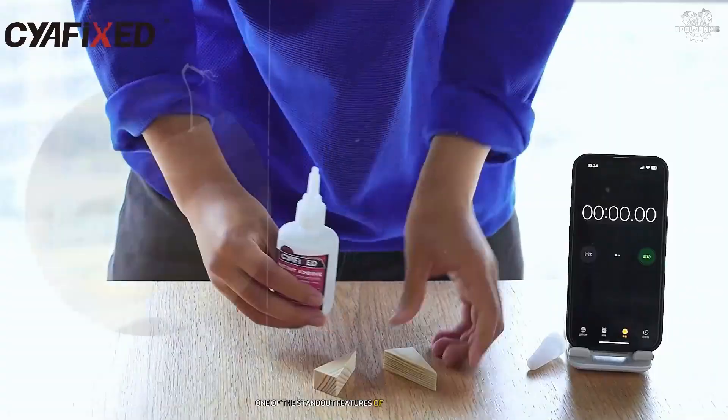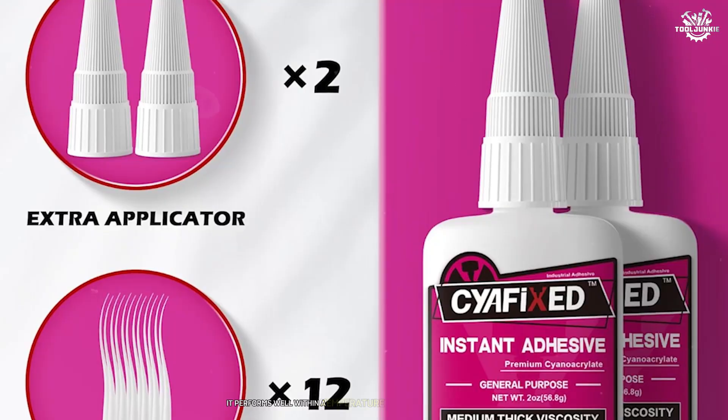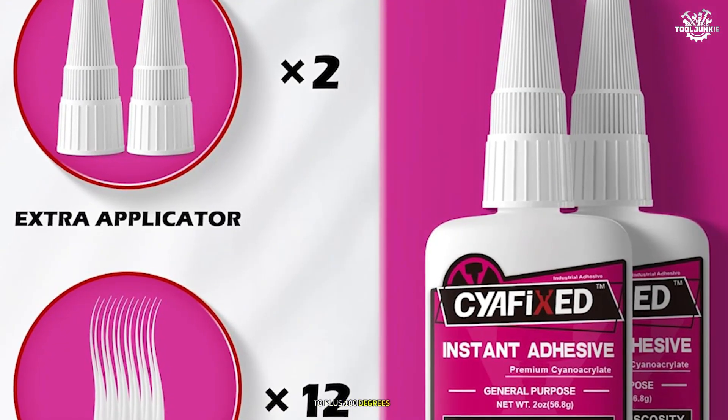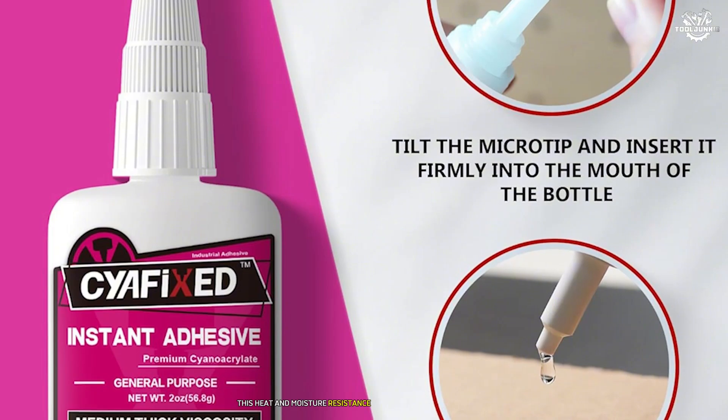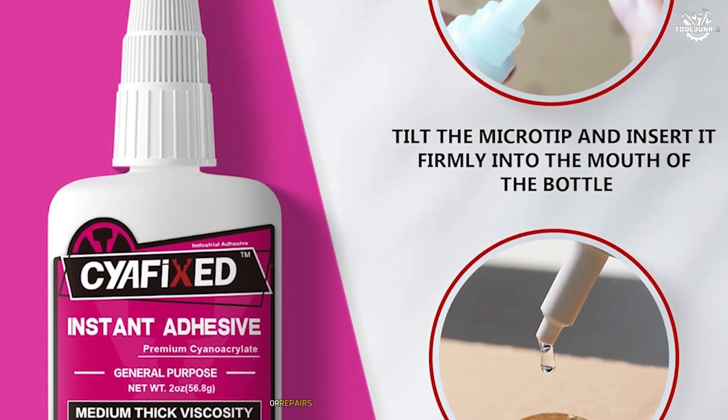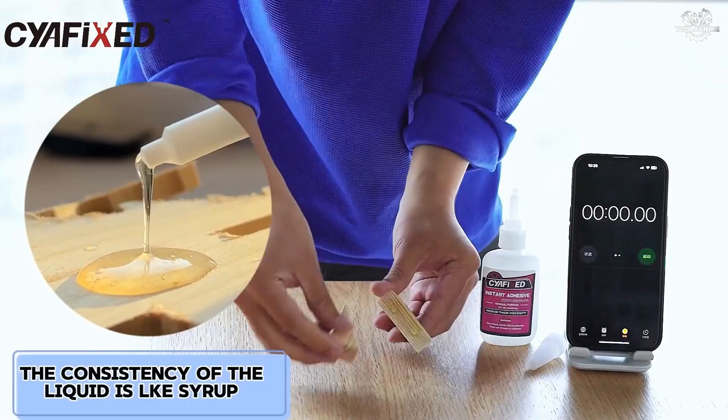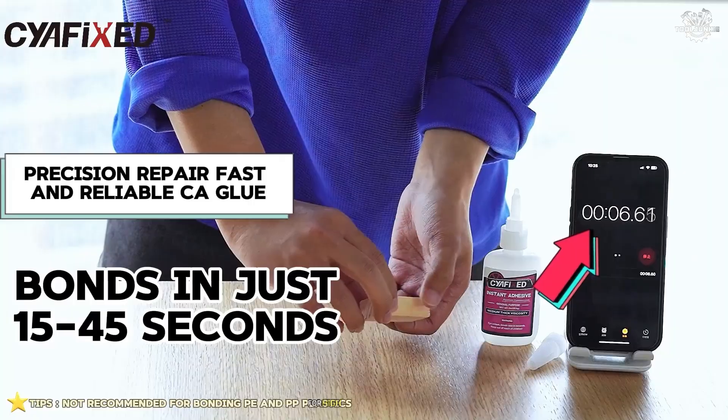One of the standout features of CiaFix is its durability under extreme conditions. It performs well within a temperature range of minus 5 degrees Fahrenheit to plus 180 degrees Fahrenheit, making it ideal for both indoor and outdoor projects. This heat and moisture resistance ensures that your PLA models or repairs can withstand environmental stress without compromising the bond. Additionally, its impact-resistant formula adds to its reliability for high-stress applications.